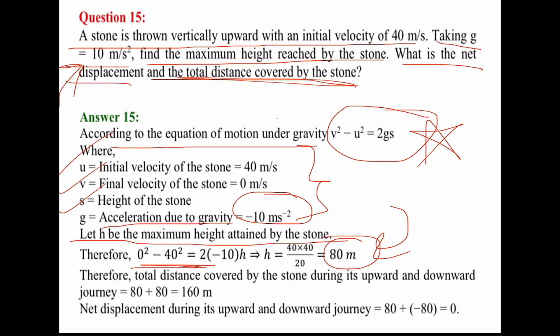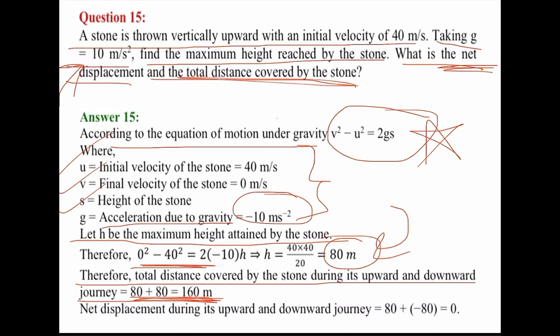To find the total distance covered by the stone during its upward and downward journey — that is, from initial to final position — we simply add: 80 plus 80, which equals 160 meters.